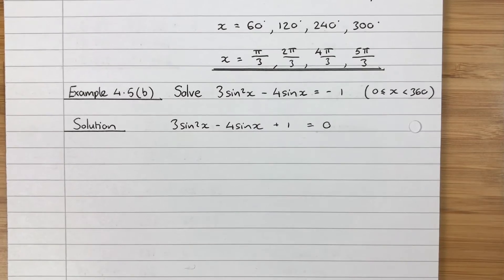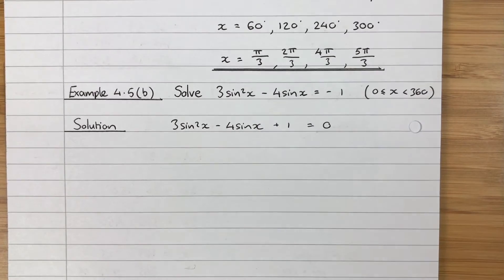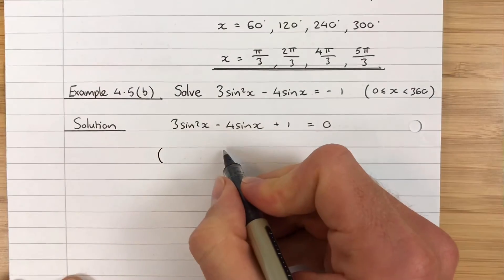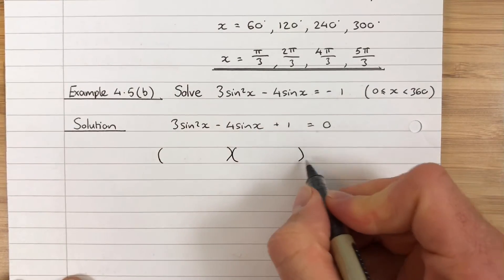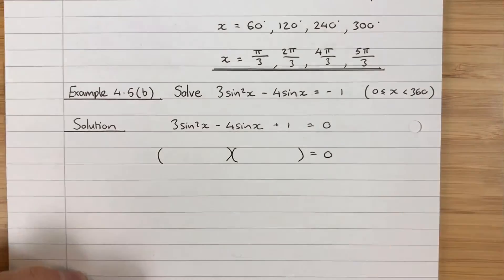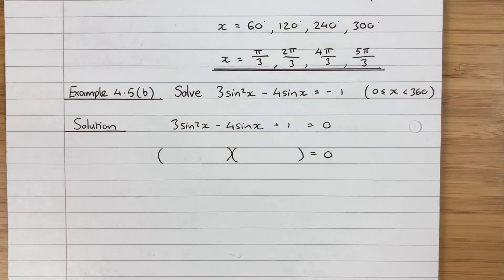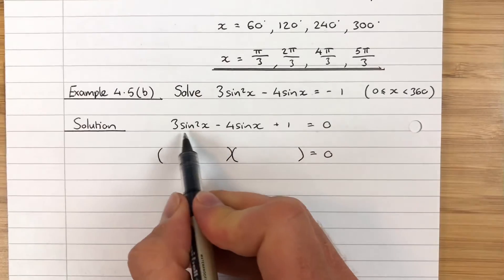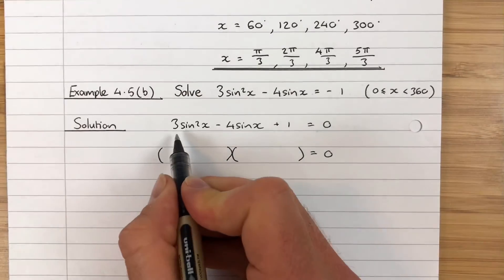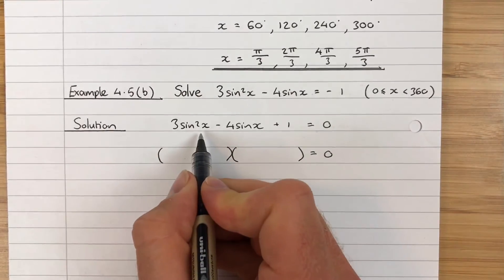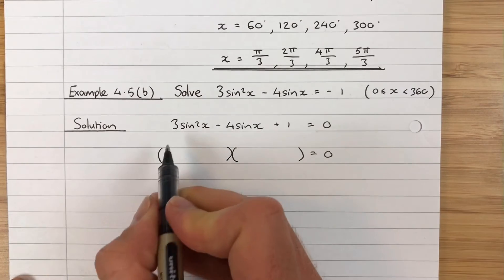We're then going to do what we would usually do with a quadratic equation, which is factorise to solve. So we are going to factorise this into a double bracket. This might look a bit bizarre to start with, but I promise you'll just get used to it. So 3sin²x—what does that really mean? What multiplied by what gives me 3sin²x? Well, to get 3, it must be 3 times 1.